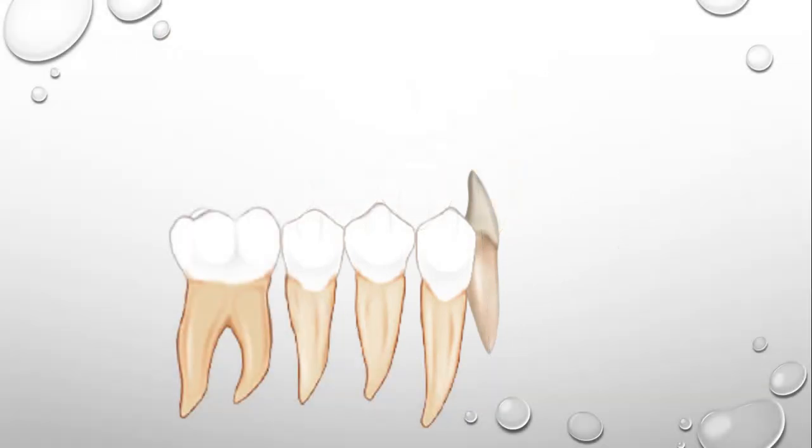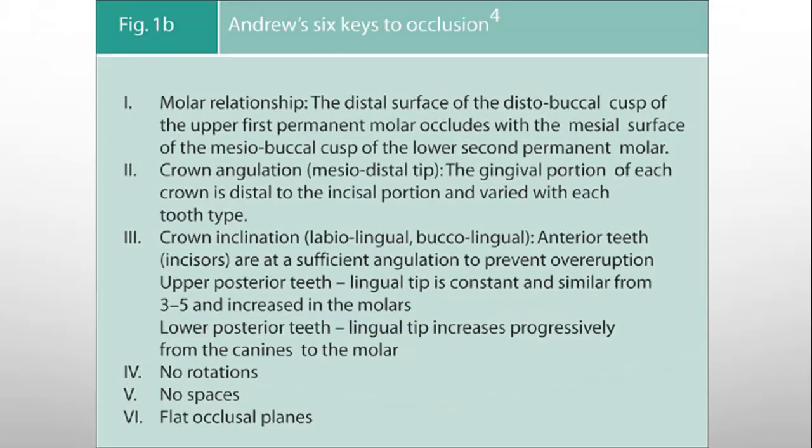In both of these cases, the curve of Spee is exaggerated. And if you want to correct the deep overbite, it is necessary to flatten this curve of Spee or occlusal plane. And that is the sixth key given by Andrews in his six keys to occlusion.